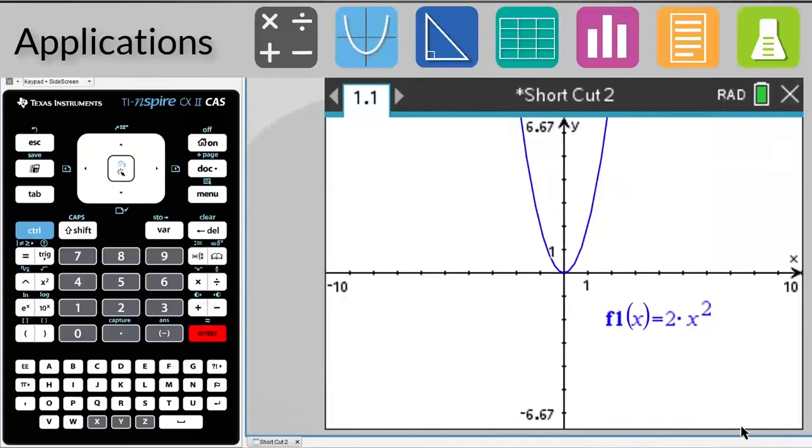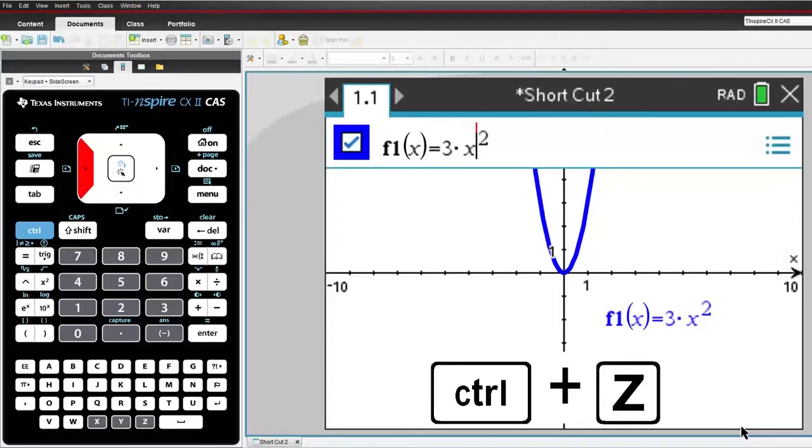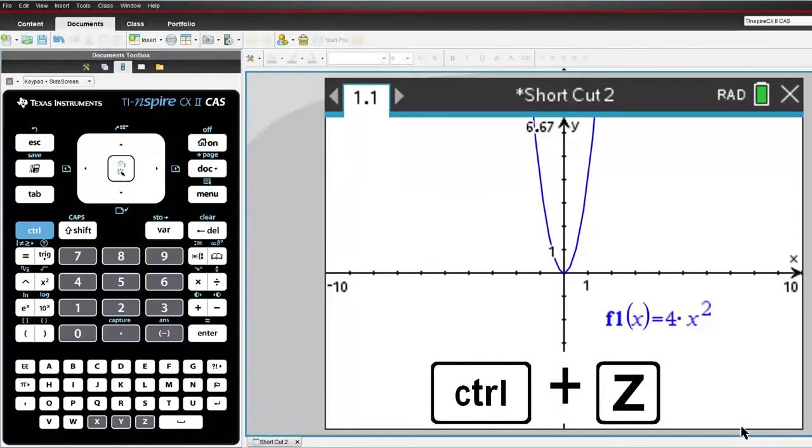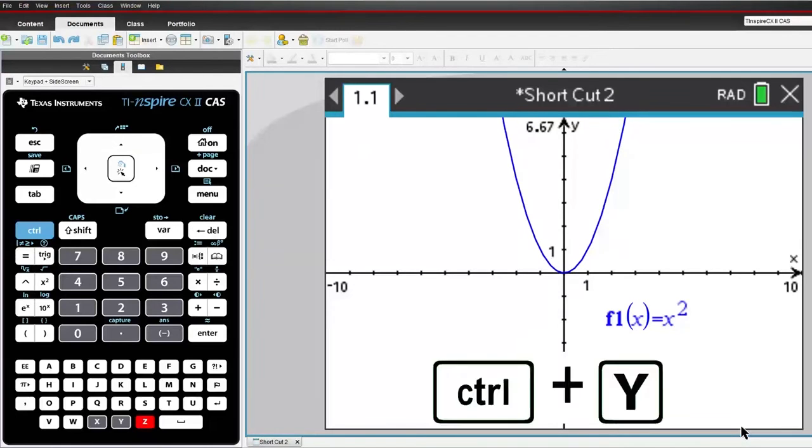From time to time, we can all make mistakes. Pressing CTRL-Z allows you to undo a mistake, while CTRL-Y allows you to redo that undo.